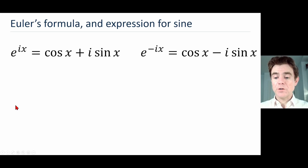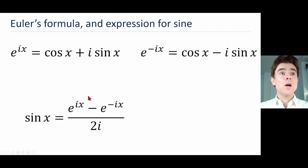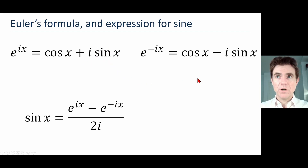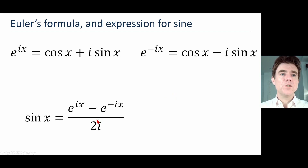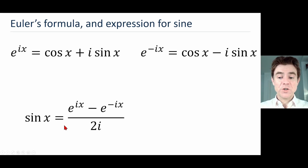Something very similar can be done for the sine case: subtracting e^(-ix) from e^(ix) means the cosines cancel, and we have i sin x minus minus i sin x — in other words, 2i sin x. Dividing by 2i gives sine x.